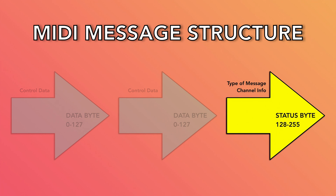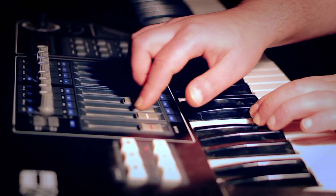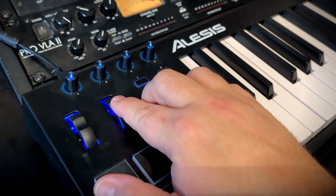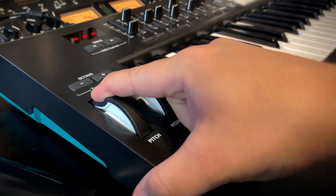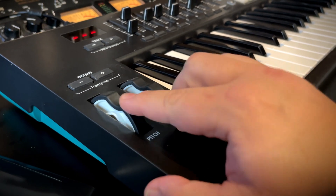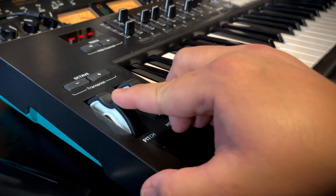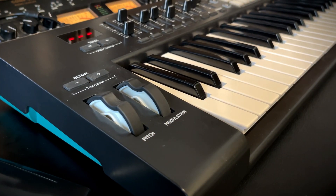The status byte is used to define the type of MIDI message. For example, pressing a key down on your MIDI controller sends a note-on message. It could also be a control change message, used for continuous controllers like knobs, faders, or the modulation wheel, or for your sustain pedal. The status byte can also define a pitch bend message — and fun fact, pitch bend is actually its own separate MIDI message; it's not a control change message and not technically considered a continuous controller.